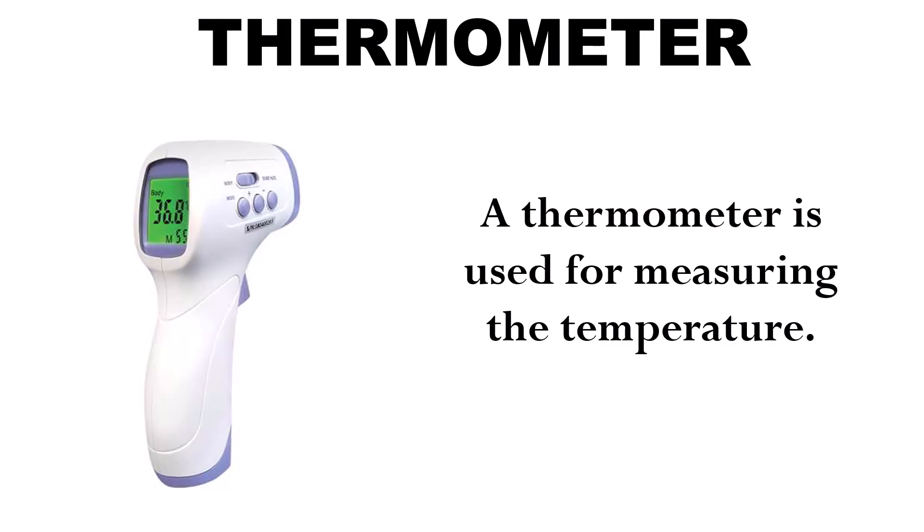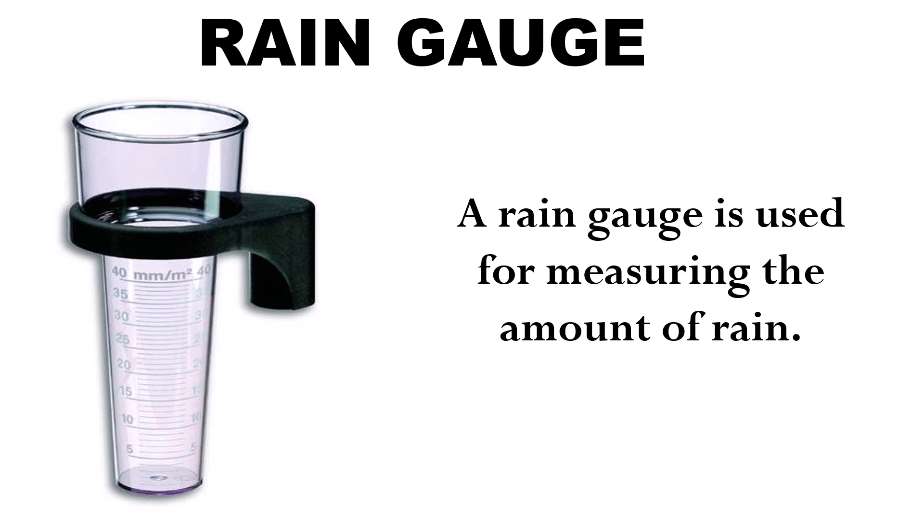Number two, thermometer. It is used for measuring the temperature. Number three, rain gauge. A rain gauge is used for measuring the amount of rain.